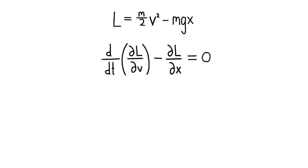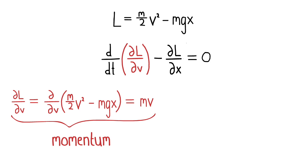First, we look at delta L over delta v, which is the partial derivative of our Lagrangian with respect to the velocity v. This gives us mv, which is the momentum of the particle. In fact, for any Lagrangian, the partial derivative with respect to v is always the momentum of the system.